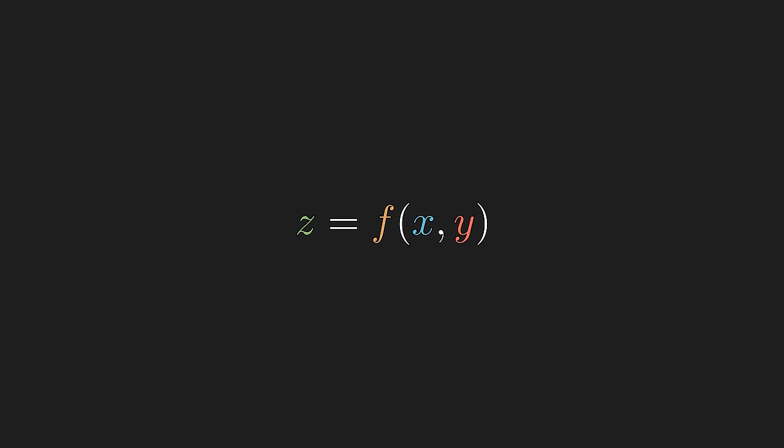If z is a multivariable function with two input arguments, then we can represent the dependencies with arrows. For each of those dependencies, we're interested in how much z changes with respect to each variable, which is the definition of the partial derivative.